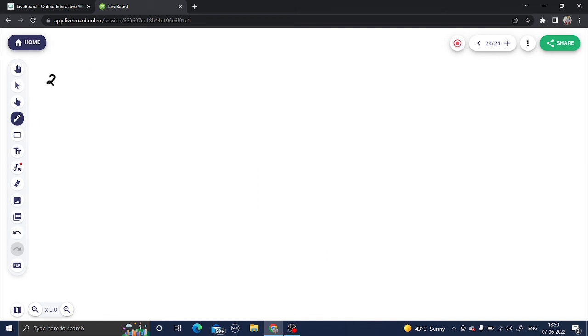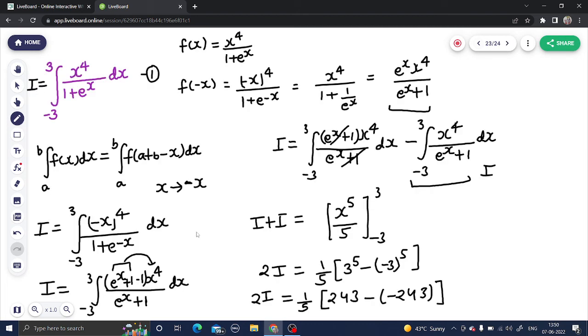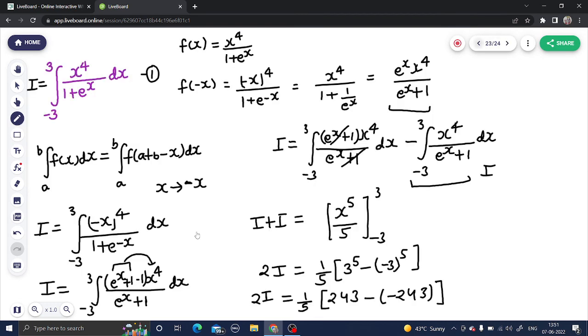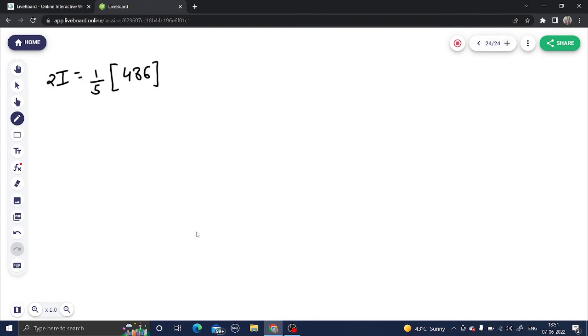I am getting 2i as 1 by 5, 243 plus 243 that will be 486. If I cancel with 2 I will get this as 243. i I am getting as 243 divided by 5.